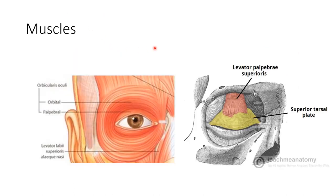Now let us see the muscles concerned with movements of the eyelids. Here you are seeing a muscle encircling the eyelid like a sphincter — this is the orbicularis oculi, a sphincteric muscle. The other muscle is attached to the superior tarsal plate in relation with the upper eyelid, and this is called the levator palpebrae superioris muscle.